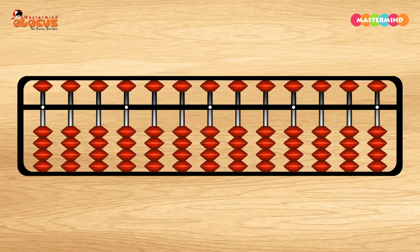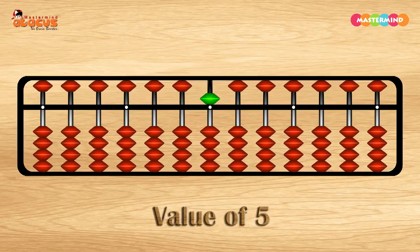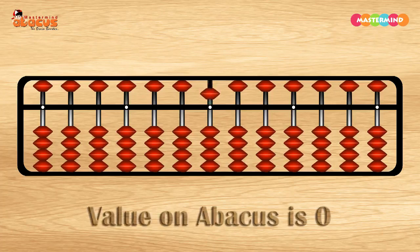Similarly, if we move one upper deck bead to touch the horizontal bar, we get a value of 5. But if the bead does not touch the horizontal bar, the value on Abacus is 0.